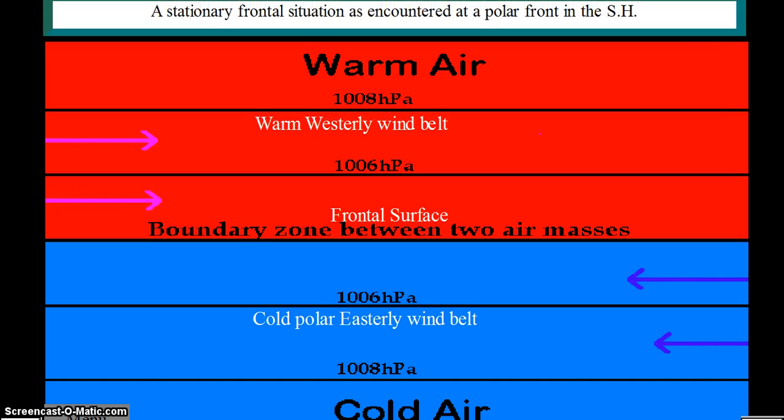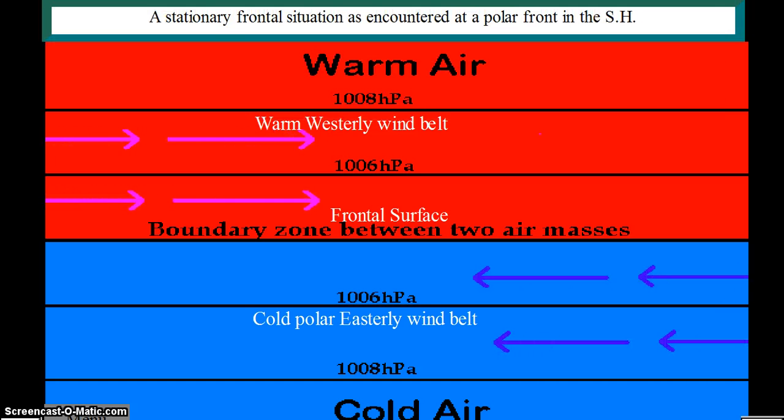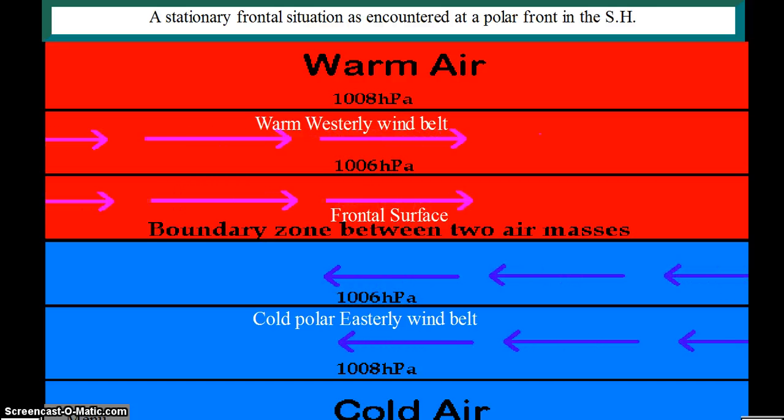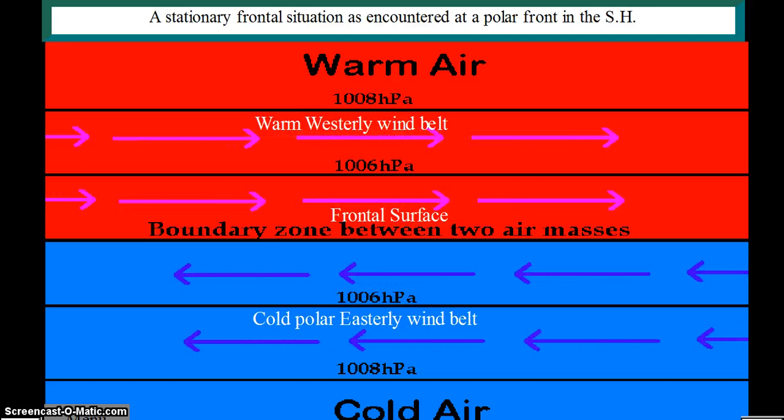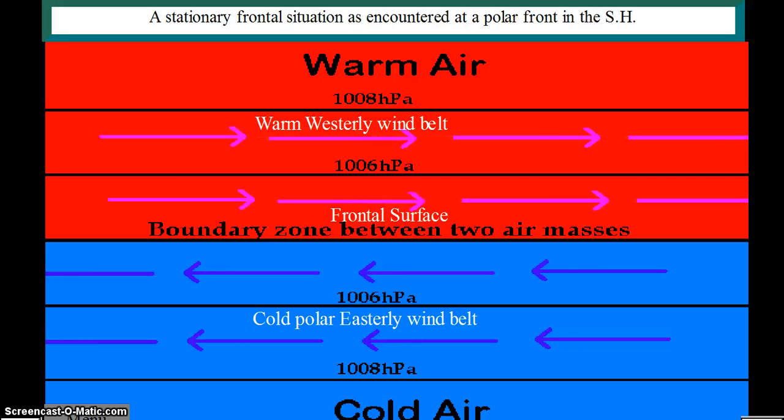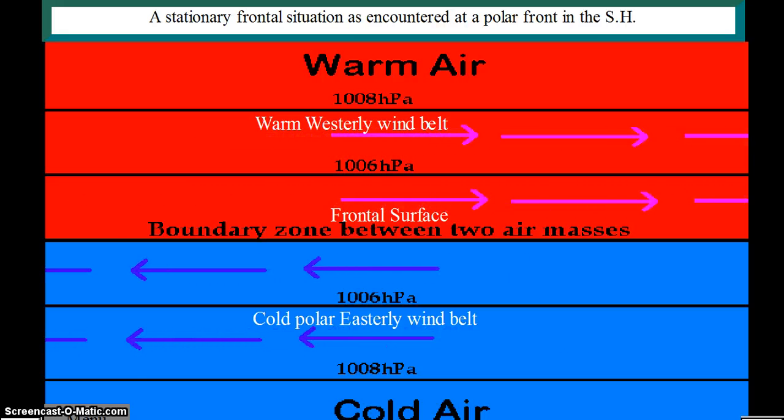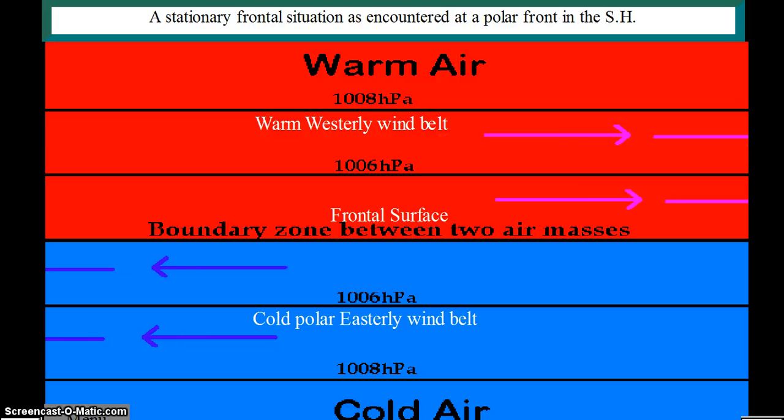Warm air from the westerly wind belts and cold air from the polar easterly wind belts do not mix easily since they have different temperatures and different densities. The warm air and the cold air are separated by a frontal surface.